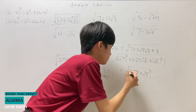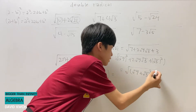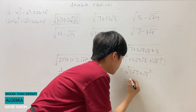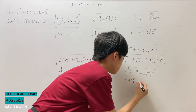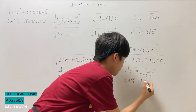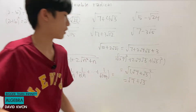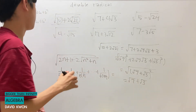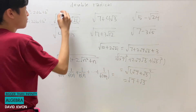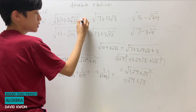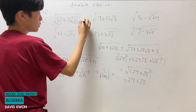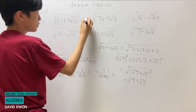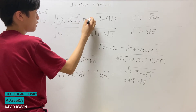The root and the square cancel out, leaving the answer as square root of 7 plus square root of 3. So this was equal to square root of 7 plus square root of 3.